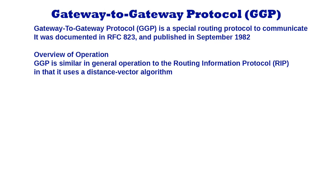Overview of operation of GGP. GGP is similar in general operation to the Routing Information Protocol, i.e. RIP, in that it uses a distance vector algorithm to determine the best routes between devices. Like RIP, the metric is simple hop count, so GGP will select a route with the shortest number of hops. As in RIP, that hop count is not always the best metric of cost for a router.